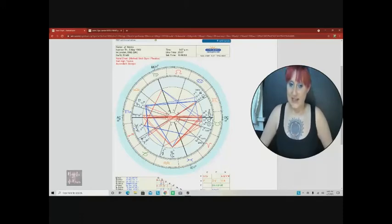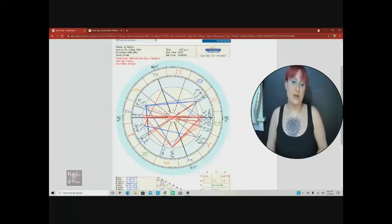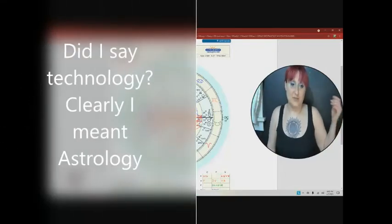Now, the ruler of the ascendant sign is the ruler of the chart. So if you're going with traditional astrology, we would be looking at Mars and then nowadays, current day technology, we'd be looking at Pluto.